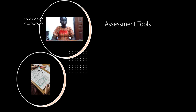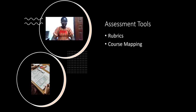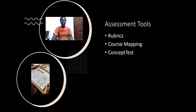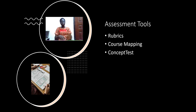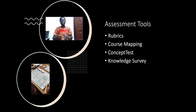There are tools we could use for assessment. First, we have rubrics, which help to guide the scoring. We have course mapping — you map the course according to the stated learning outcomes to find out what has been achieved by students and what is still not achieved. Then there is the concept test, which helps to test various concepts using illustrations to identify the concept and test the knowledge of students.